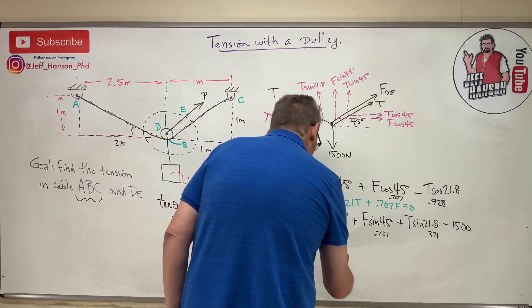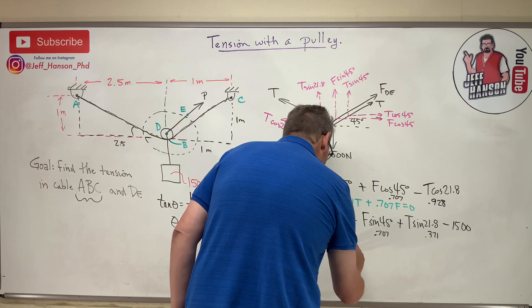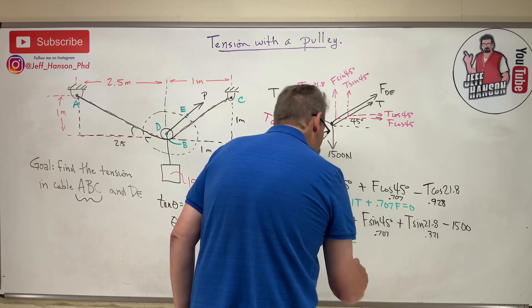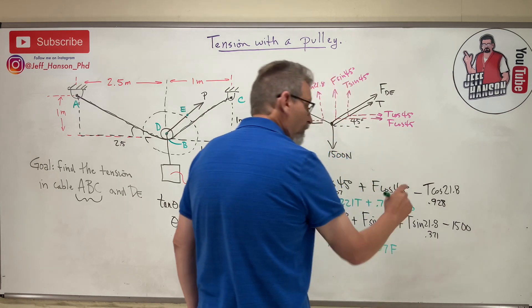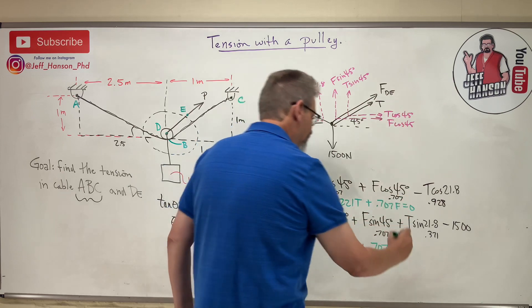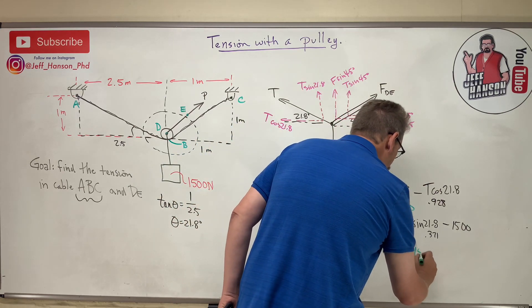1.078. So 1.078T plus 0.707F, and I'm going to move that 1500 to the other side, equals 1500.